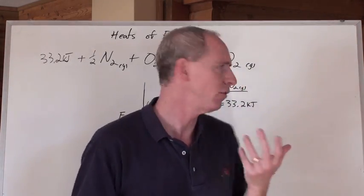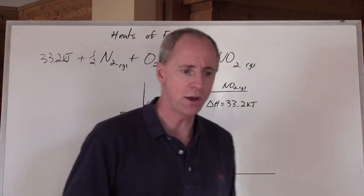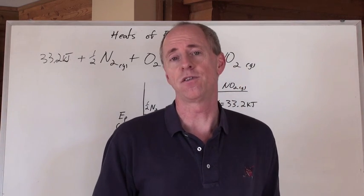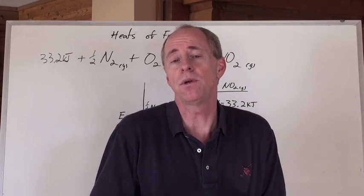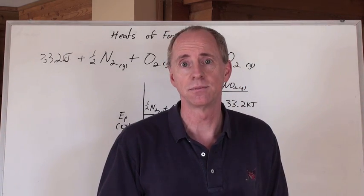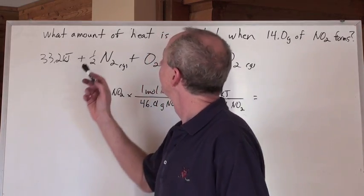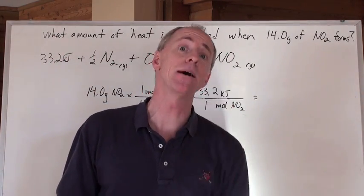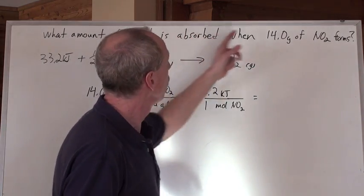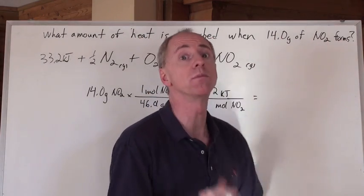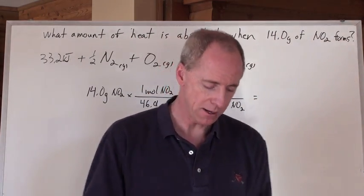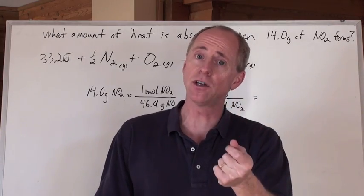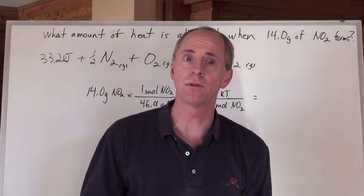Now, what if you don't have one mole of a chemical? What if you actually are given some other information, like a certain amount of grams? Well, then we have to do a little bit of stoichiometry. We take that last equation, and we say, okay, well, what amount of heat is going to be absorbed? And it really should be the net amount of heat that's going to be absorbed when 14 grams of NO2 forms from its elements. Okay, so you're asked that.